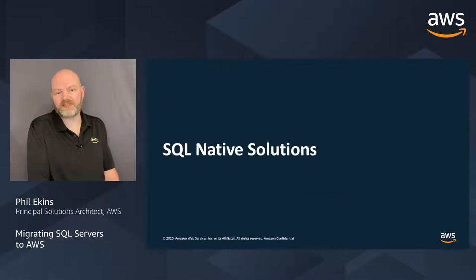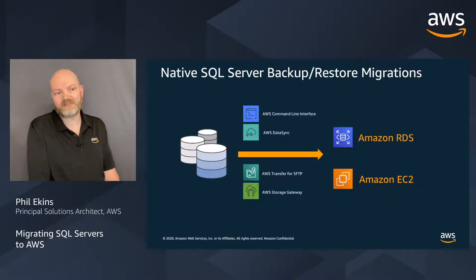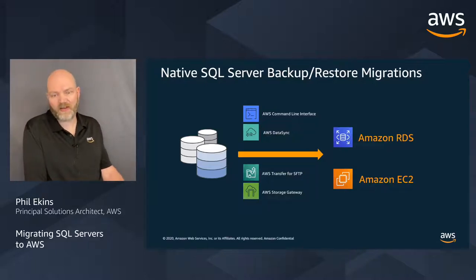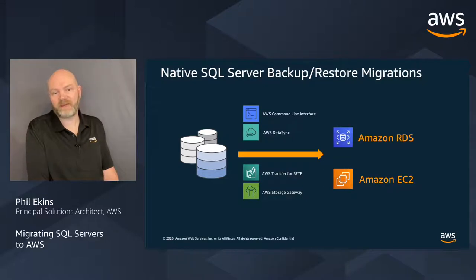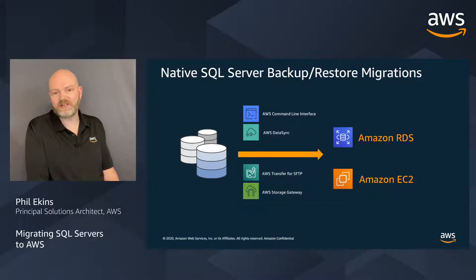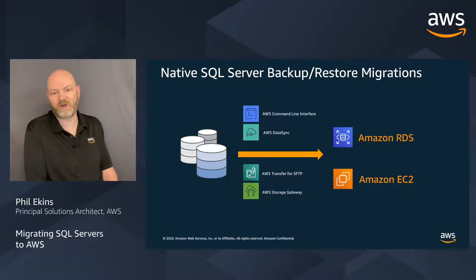For native SQL Server backup and restore — the bread and butter of DBAs — most DBAs are already rolling some kind of native backup solution. The key question is how to get those files from your corporate data center into AWS. RDS needs backups to live in S3; EC2 needs backups on a Windows share, either local disk on the EC2 instance or Amazon FSx, our managed file server. We have a command-line interface that lets you select a file and push it up to S3 or pull it down. DataSync is a more automated solution — you identify your source directory, identify your target (an S3 bucket for RDS, a managed file server or local drive for EC2), and as files appear and T-log backups roll, DataSync recognizes those new files and pushes them across.